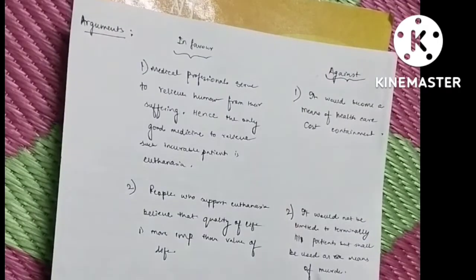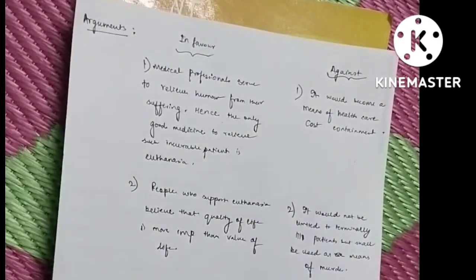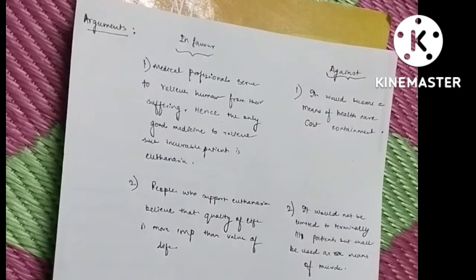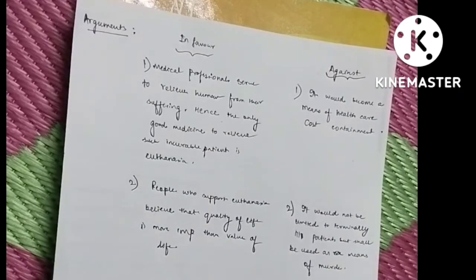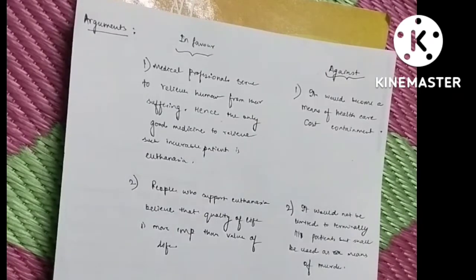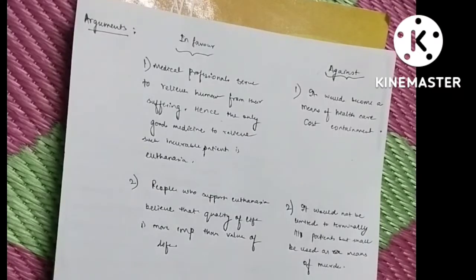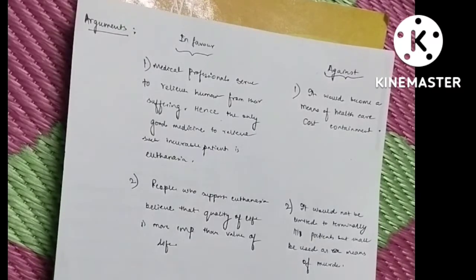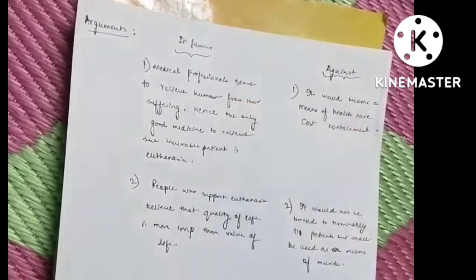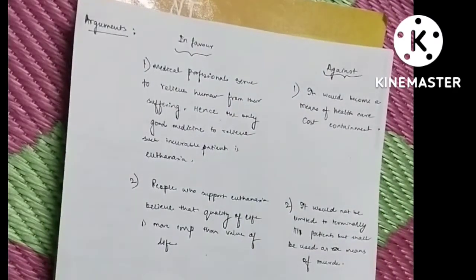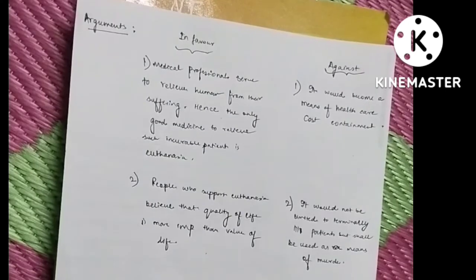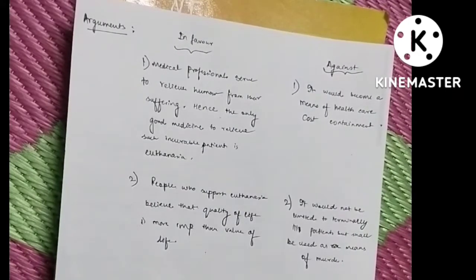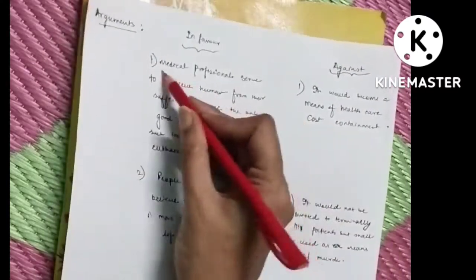It is believed that medical professionals are responsible for relieving the patients from their sufferings. So if the terminally ill patient or severely ill patients, the only medicine to their suffering is the death of the patient, so this is a point in favor of euthanasia. The second point in favor is that some people believe that quality of life is more important than value of life. So killing a person would be better if you want to improve the quality of life. So the two points: one is medical professional belief and second is quality of life is more important.